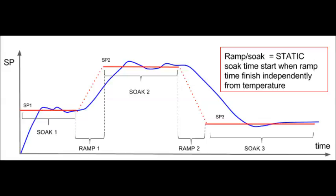There are two implementations of this algorithm called static and dynamic. In the static execution, the soak time starts when the ramp time finishes, and this is independent from the current temperature. As you can see in the graph, here you have two setpoints — SP1 and SP2 — and two soak times. Soak time 2 starts independently from the temperature when the ramp ends.